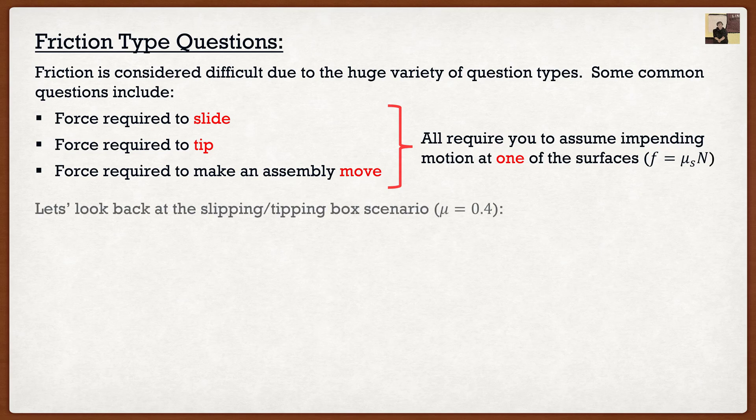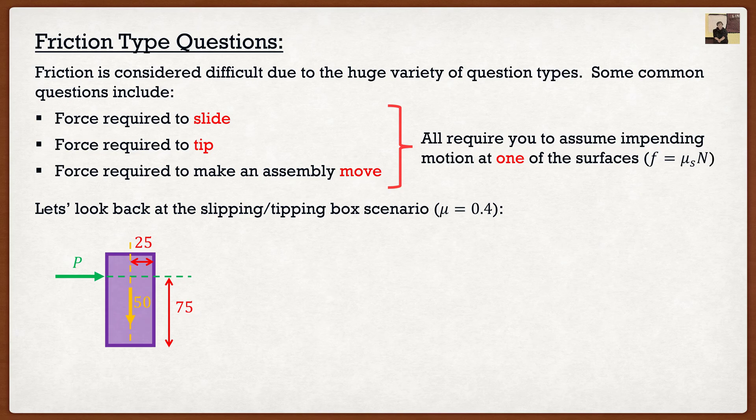Let's look back at an example to show you guys what I mean. Let's say that we have our box slipping or tipping scenario and let's say that our coefficient of static friction is equal to 0.4. We have a box, we have a force P, and of course it has a weight of 50 and we're given some dimensions. Now a typical question would say, what is the maximum force this box can take before it starts to move?